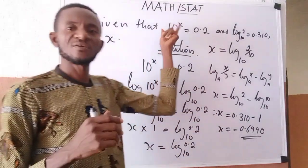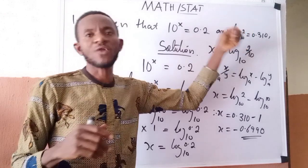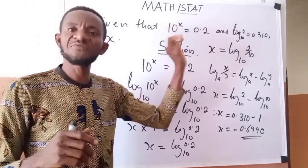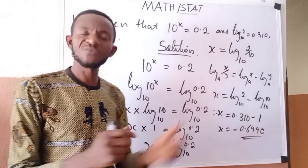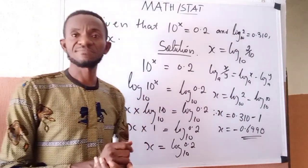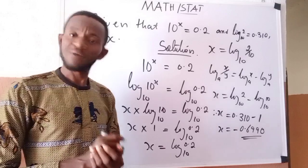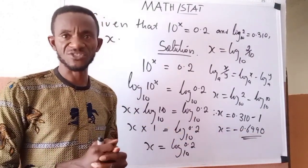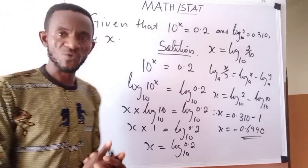Whenever we are given an expression in the form of indices and we are given a log expression and told to evaluate, every effort should be made to link the indices to the logarithm. Once both are connected, you can surely evaluate the problem — which is exactly what we did here, by multiplying both sides with log base 10 and then solving. Drop any concerns in the comments section and we will come to your aid. Let us now call up the second question.